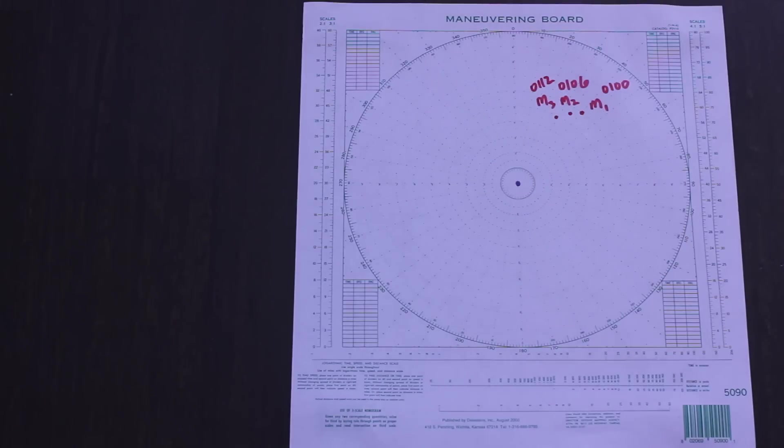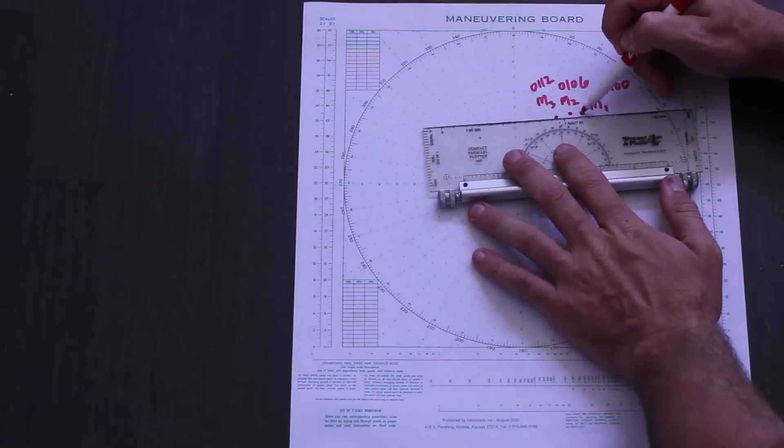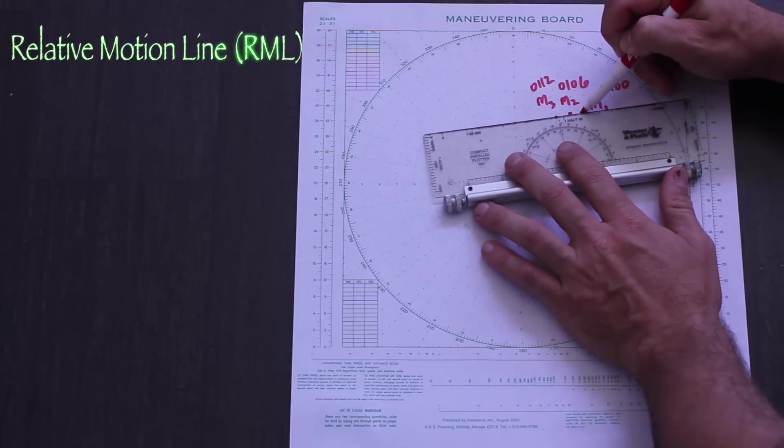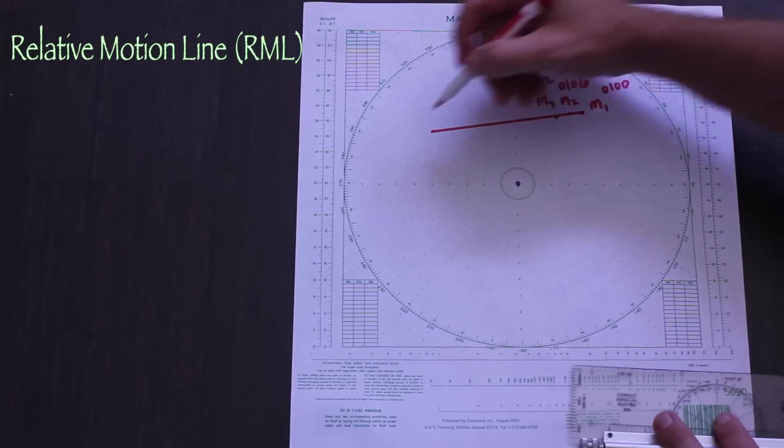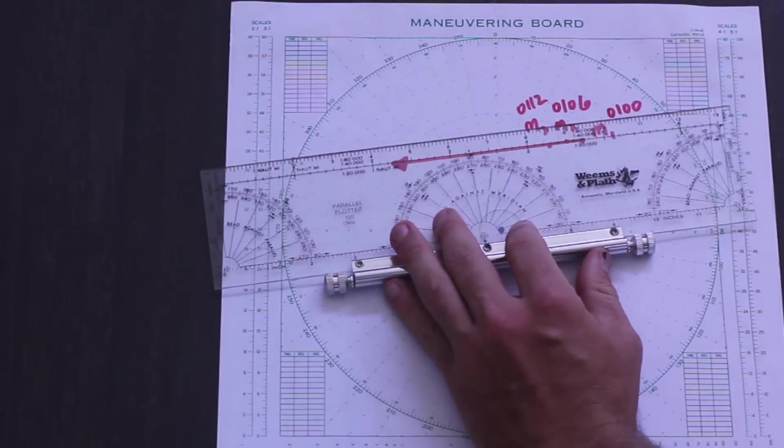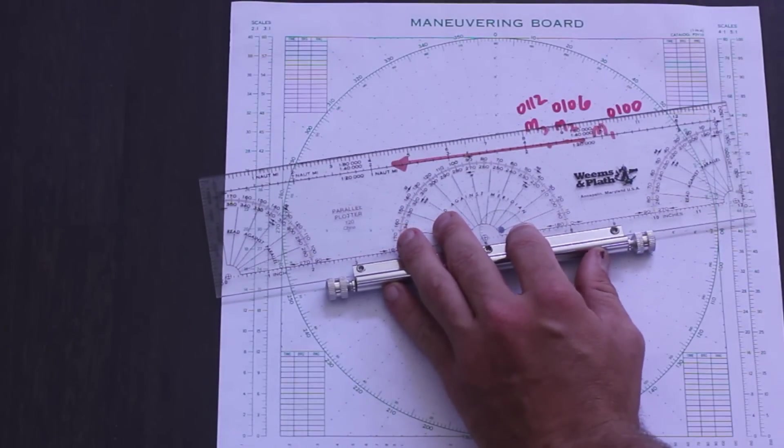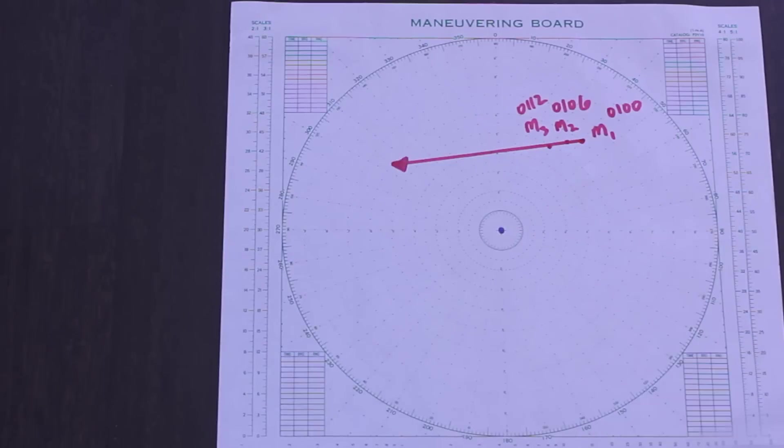When we have three points, draw a line of best fit through the points and extend it off for a good distance. This line is called the line of relative motion, and it represents the path the contact will take, relative to you, if neither ship changes its vector. You can measure the relative motion line and come up with a degree value. It's generally not necessary except in academic cases. But in this case, the direction of relative motion is 262 degrees true.